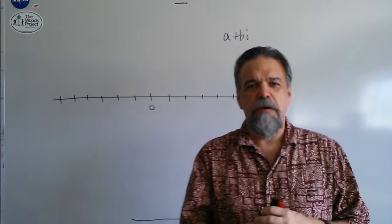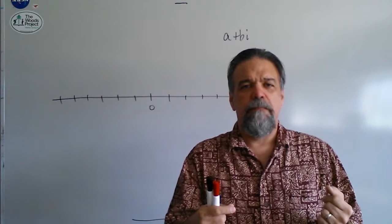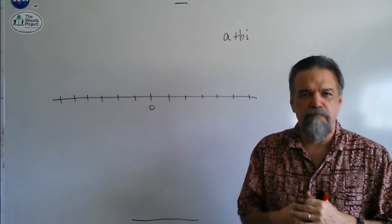In particular, what I want to know is, where are complex numbers on the number line? Now, let me just refresh your memory.